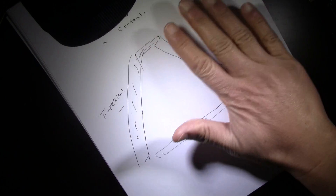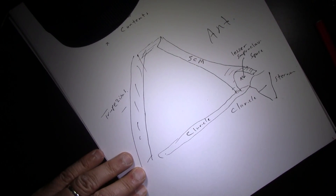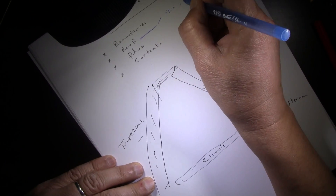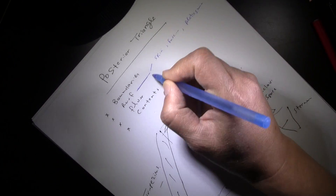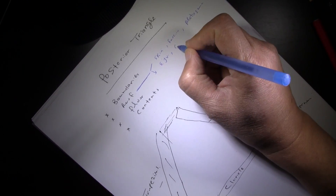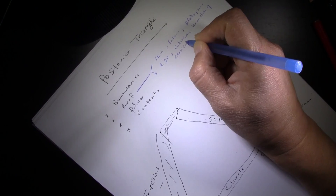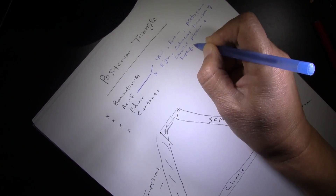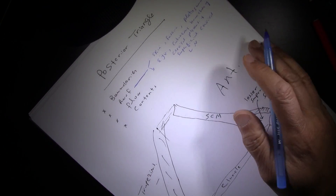The roof of the triangle is made by skin, superficial fascia, and platysma muscle between them. In the roof you will also see some vessels, specifically the external jugular vein.